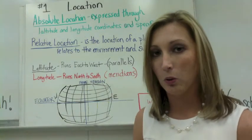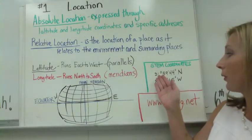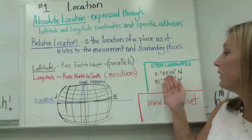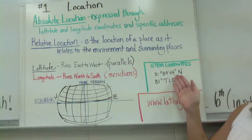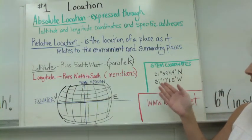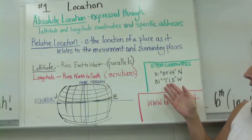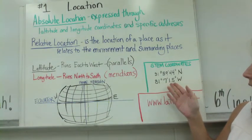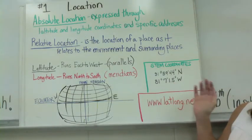One of the absolute coordinates is 31 degrees, 59 minutes and 44 seconds north latitude. And the longitude would be 81 degrees, 7 minutes and 1.5 seconds west.